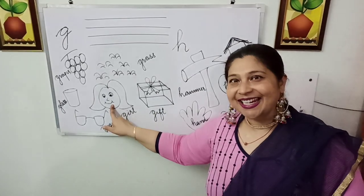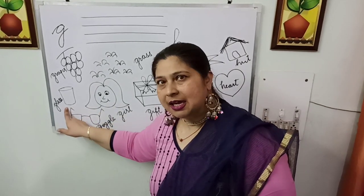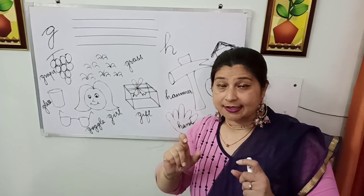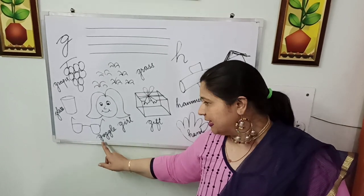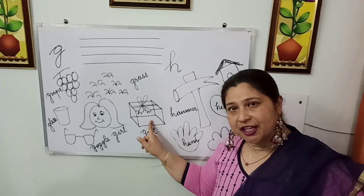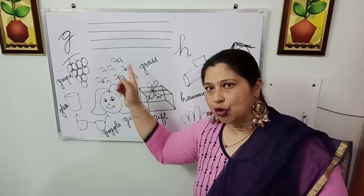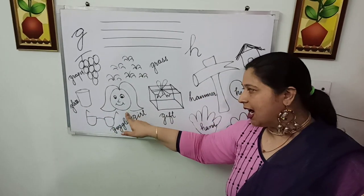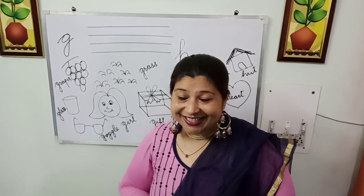'Guh' — grass. 'Guh' for girl — the gorgeous girl. 'Guh' — glass. And 'guh' for goggle — basically sunglasses. When you go out under the sun you have to wear these. These are goggles. And this is every child's favorite — 'guh' for gift. When it's your birthday, lots of people come to your home and give you gifts as a present. So let's revise: 'guh' grapes, 'guh' grass, 'guh' glass, 'guh' girl, 'guh' goggle, 'guh' gift. We also have 'guh' for goat.